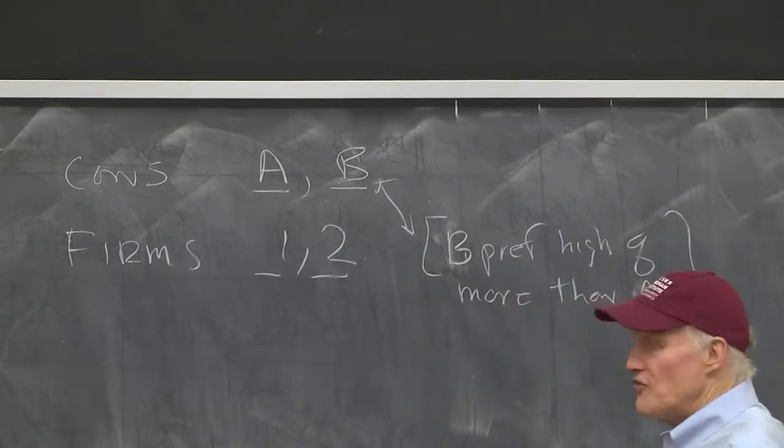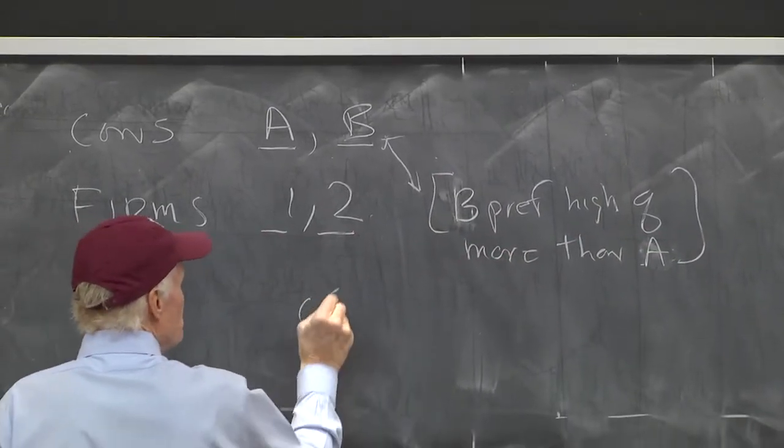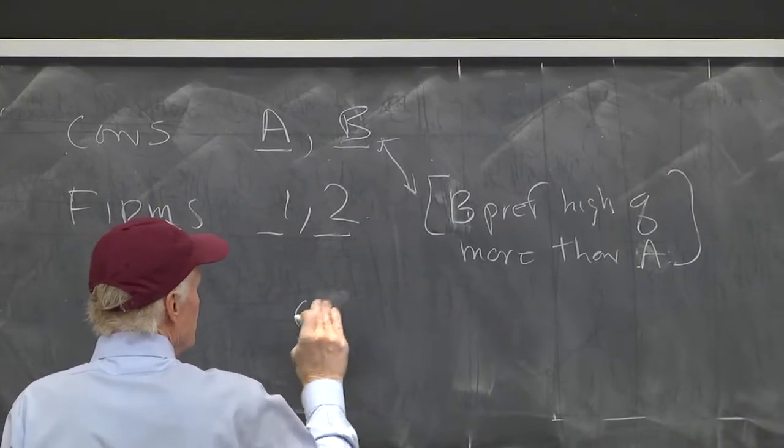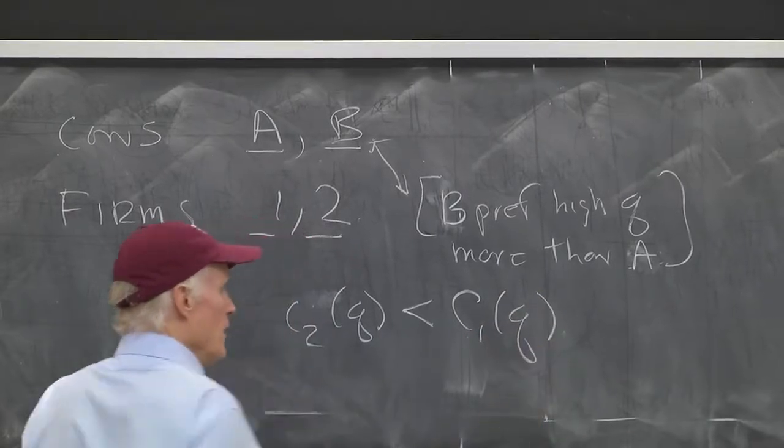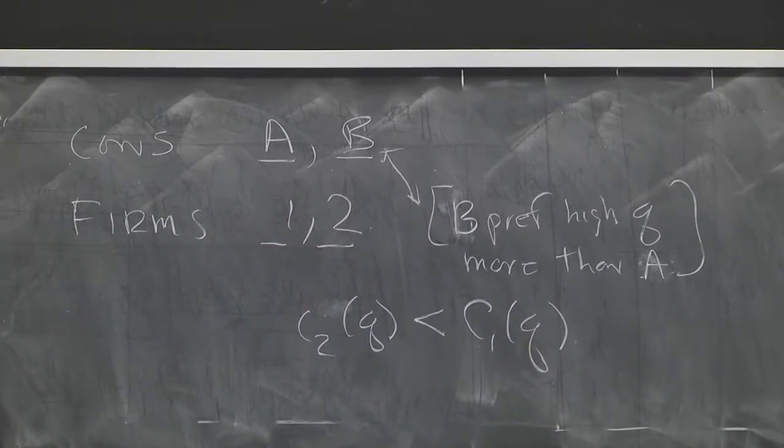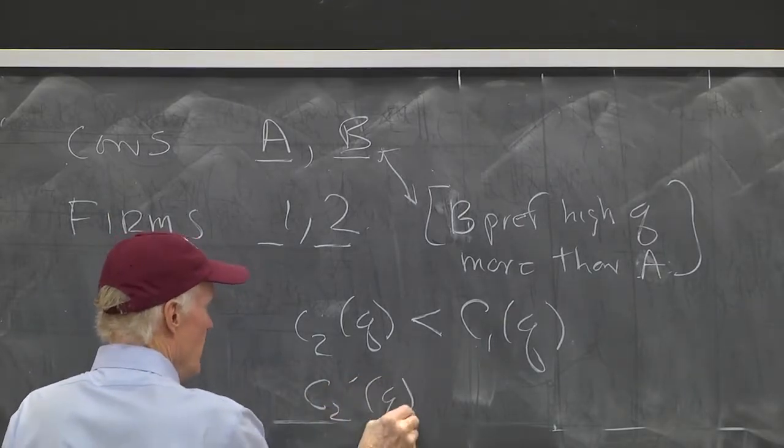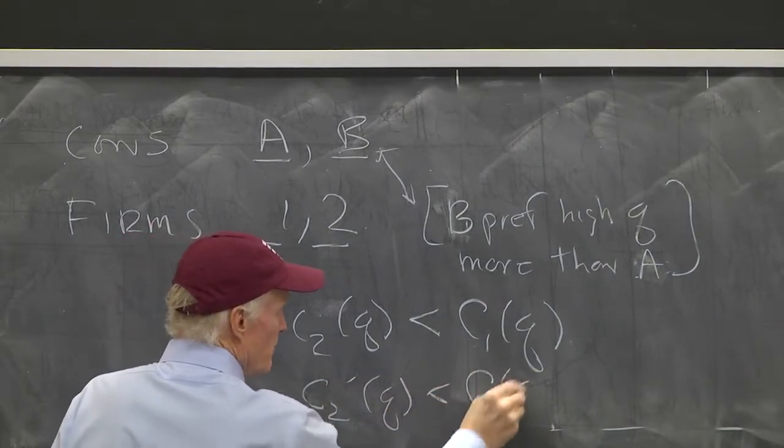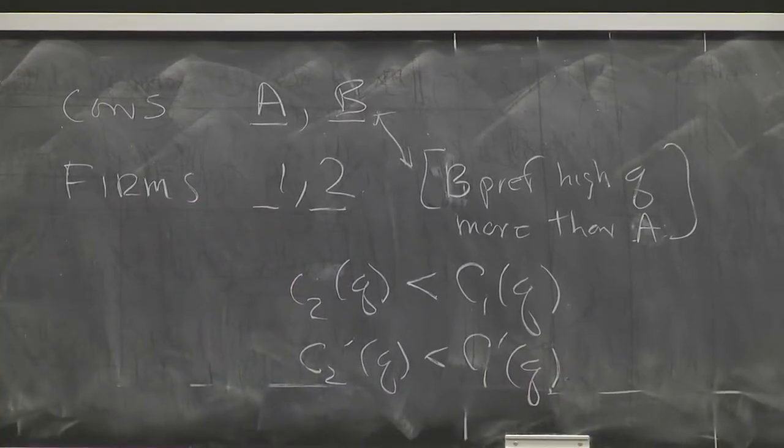Now, for 1 and 2, I'm going to make the following assumption. I'm going to assume that C2 of Q is less than C1 of Q. And I'm going to assume that C2 prime of Q is less than C1 prime of Q. This is a special case, and you can vary these all you want.